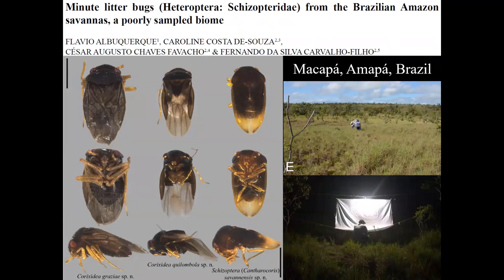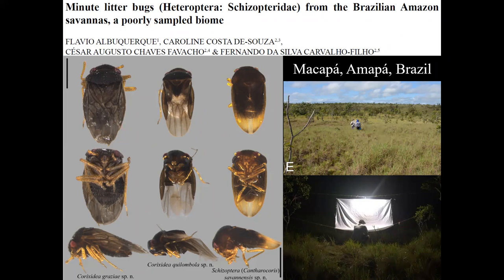Finally, I was invited to collaborate on a paper where some friends got a National Geographic grant to collect in Brazilian Amazon savannas. Whenever you think about the Amazon, you think of huge trees and beautiful forest, but there are open savanna areas too. They installed light traps and collected several dipsochromorphan specimens, specifically schizopterids. They described three species of schizopterids in this paper, and I had the honor of naming one species after Joselia Grazia.